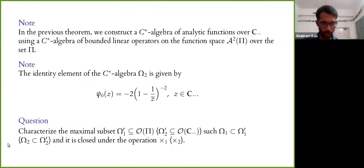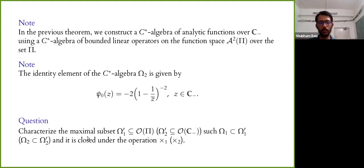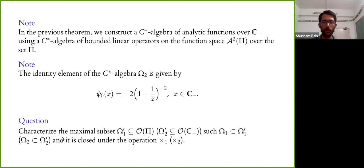What remains is to ask whether Ω₁ is maximal. Although Ω₁ is closed under the new multiplication, there may be a bigger subset of analytic functions on Π. It is natural to ask: can we characterize the maximal subset Ω₁' containing Ω₁ of analytic functions on Π that is closed under this multiplication? A similar question can be asked about the maximality of Ω₂', containing Ω₂, of analytic functions on C⁻ closed under the angular multiplication.